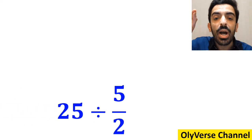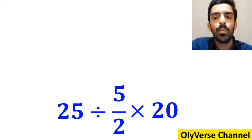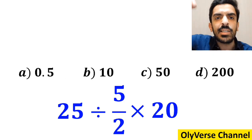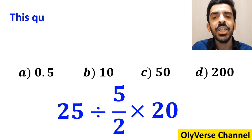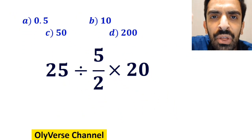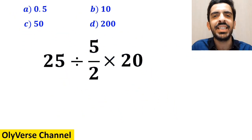What is the value of the expression 25 divided by 5 over 2 multiplied by 20? Which option do you think is the correct answer to this question? This expression confused a lot of people and made them choose the wrong option. Let's go through this question step by step and solve it together.